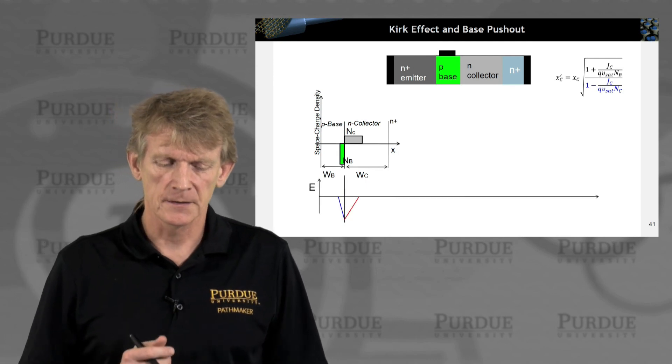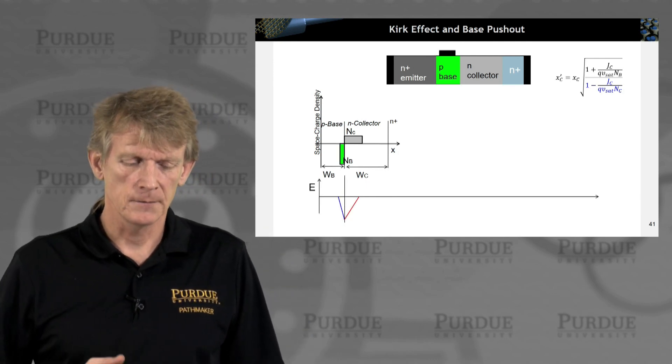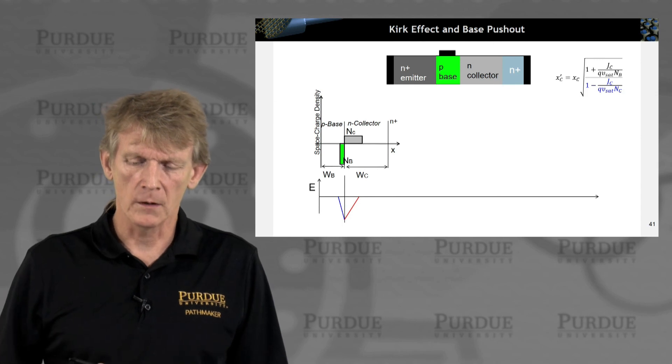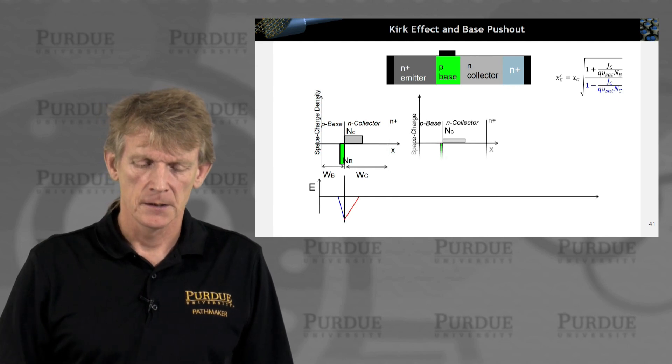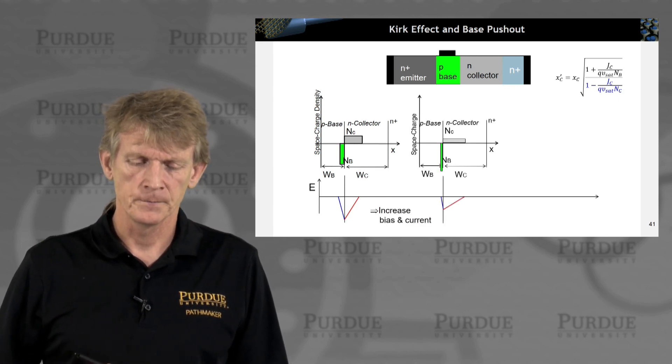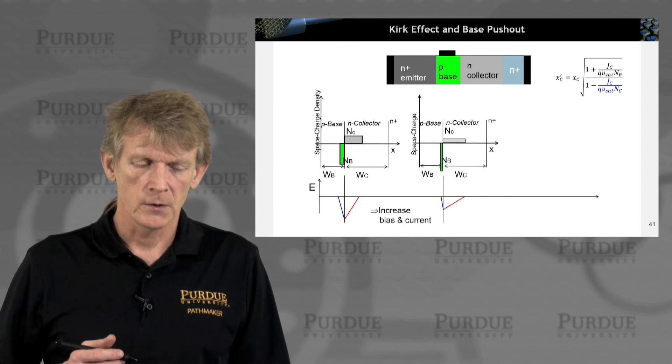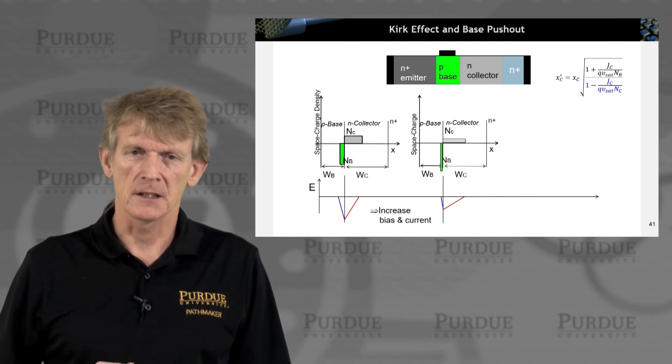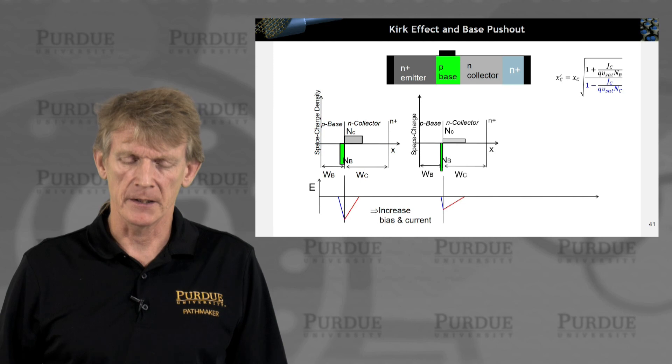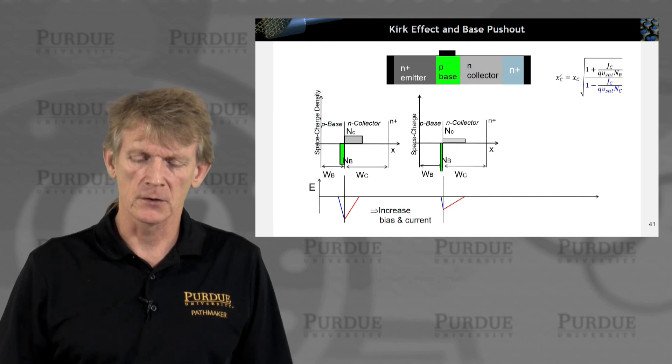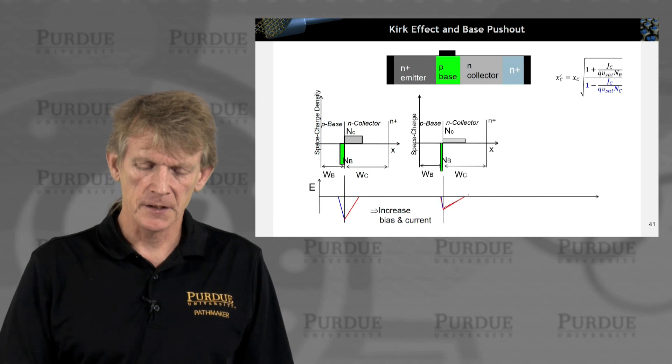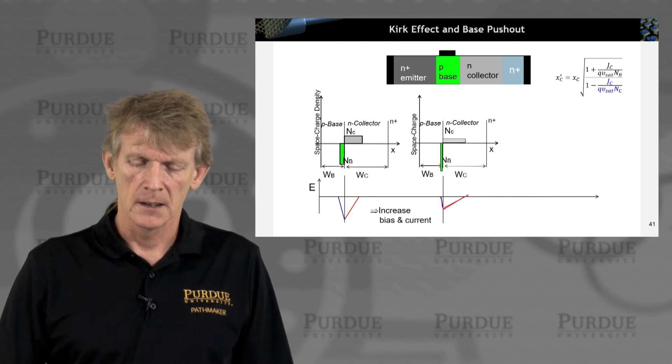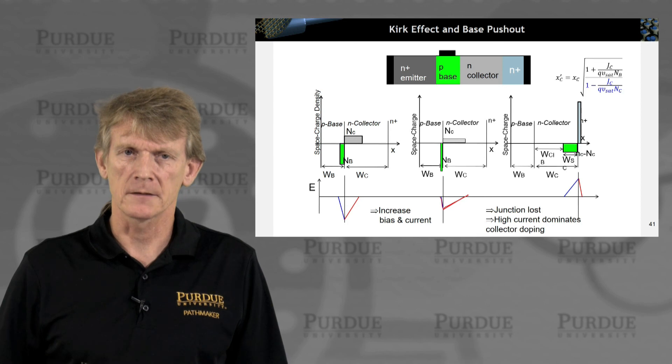So now what happens? Let's assume you are at a lower bias and you have a certain amount of electron flowing and they're not that much. Now you add more electrons in the system and you have an overall space charge that is spread out further into space. So it spreads out deeper into the collector.